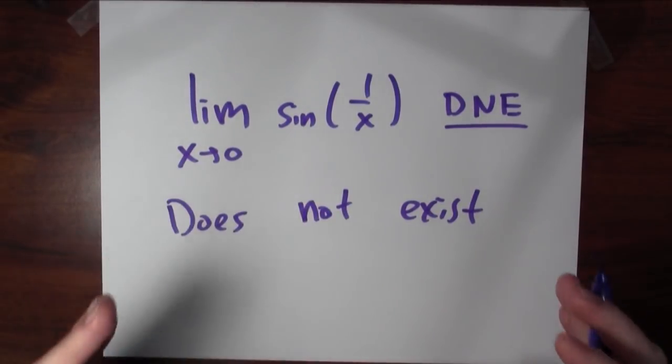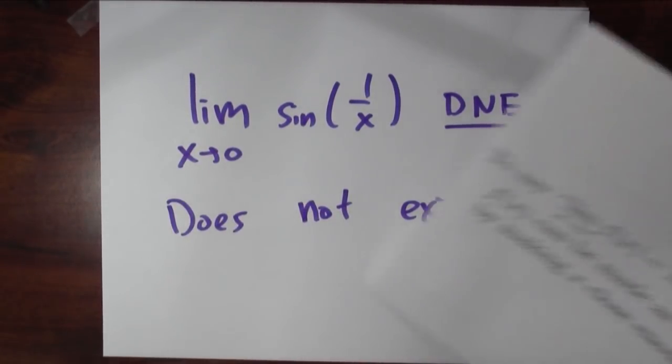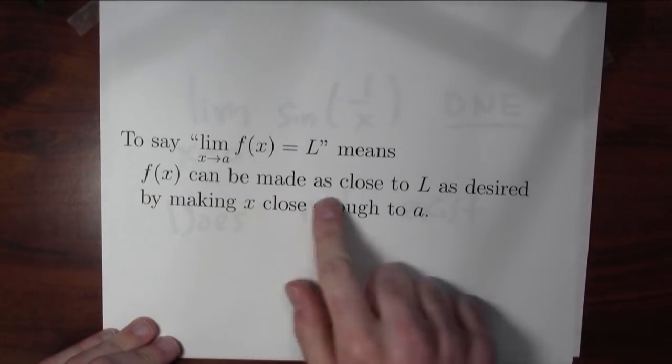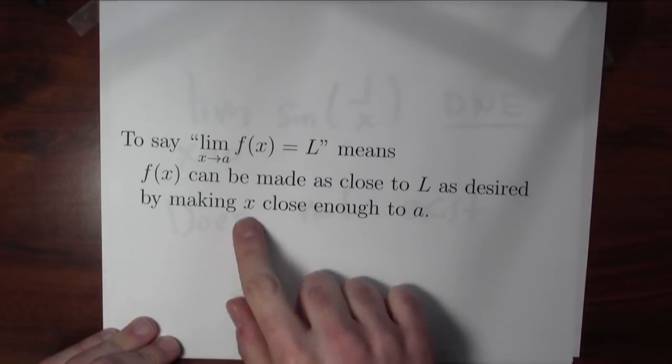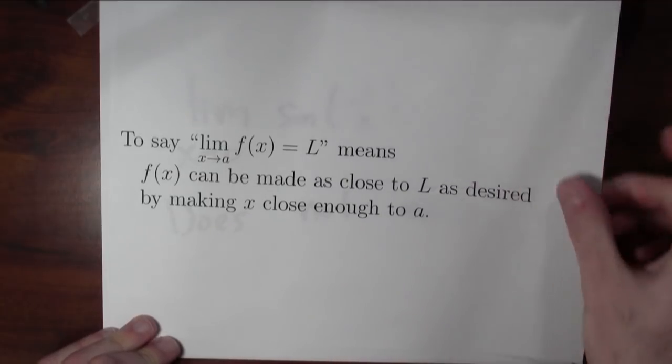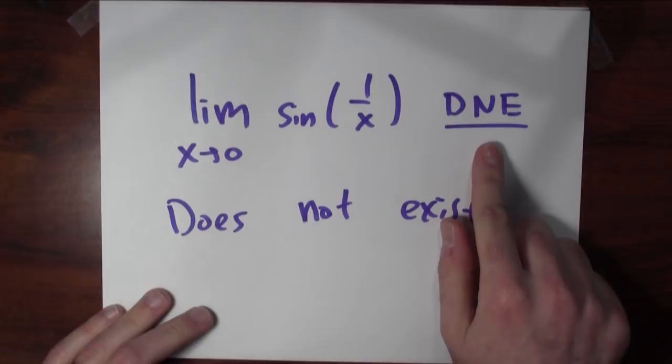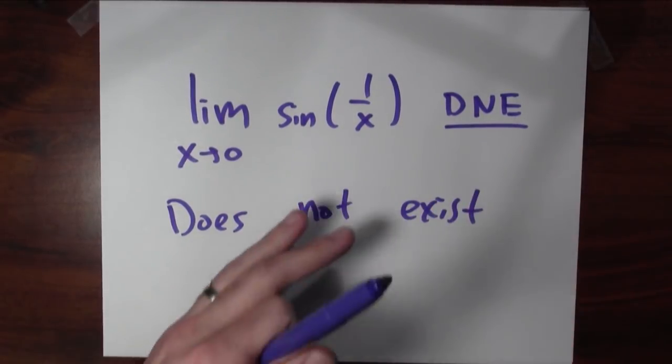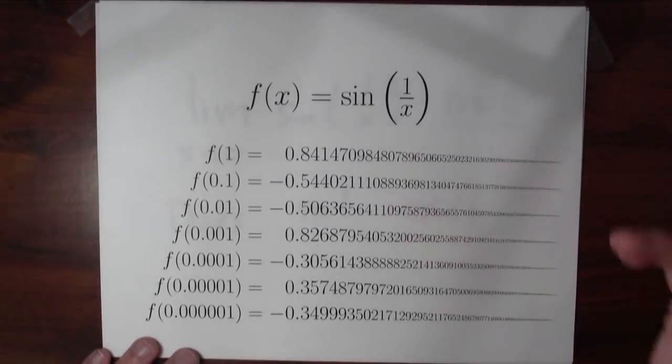What does it even mean to say it doesn't exist? Remember the definition of limit. To say that a limit equals something means that I can make the output as close as I want to L by making x close to A. So when I say that this limit doesn't exist, I mean it's not the case that this limit is equal to anything.